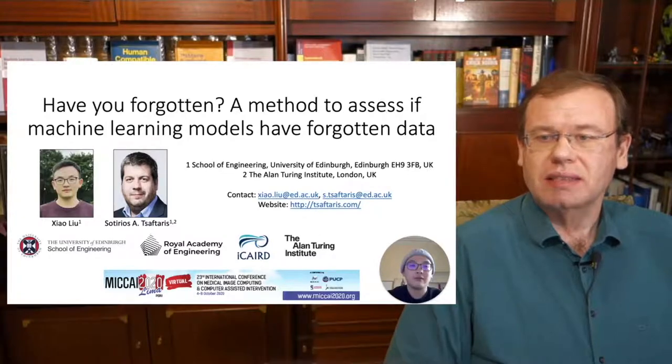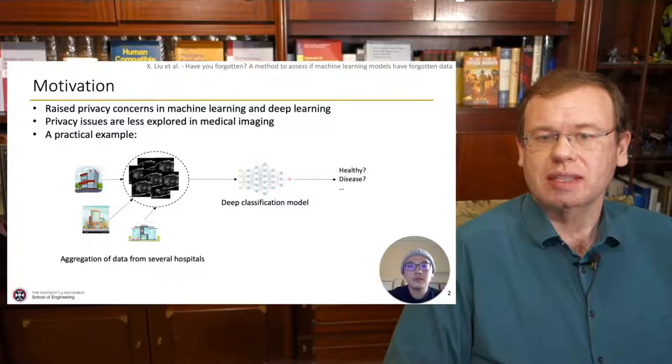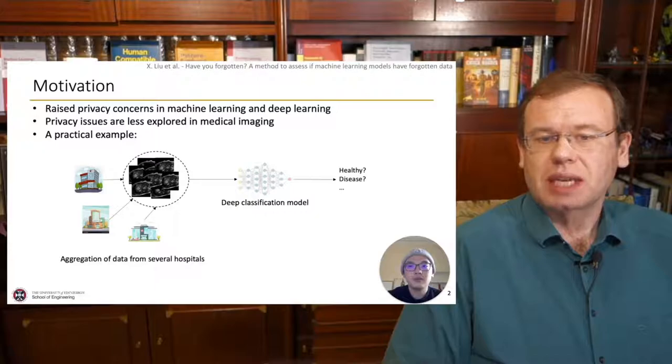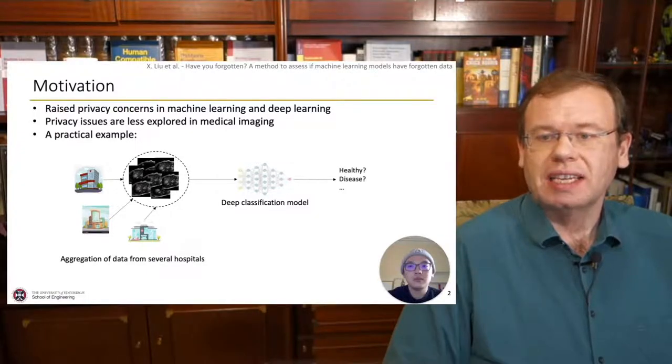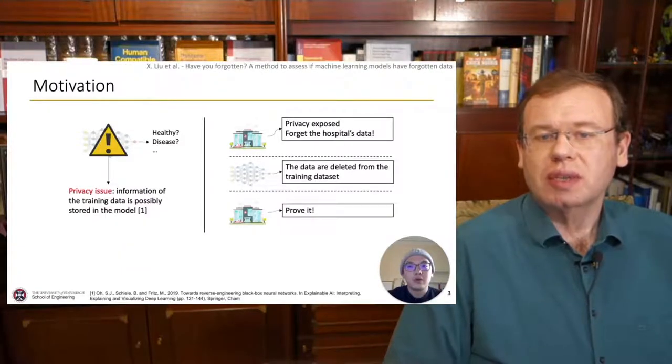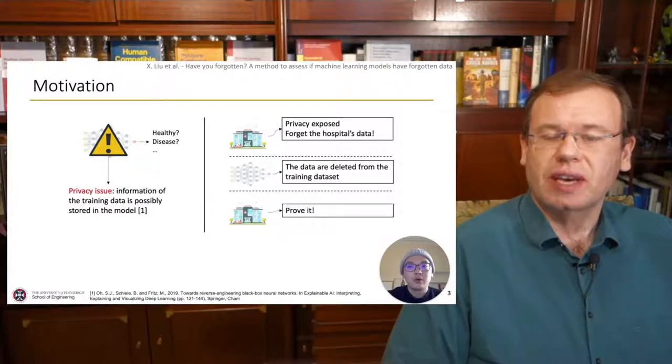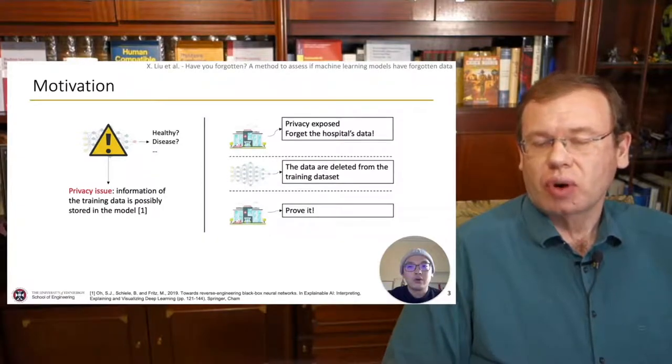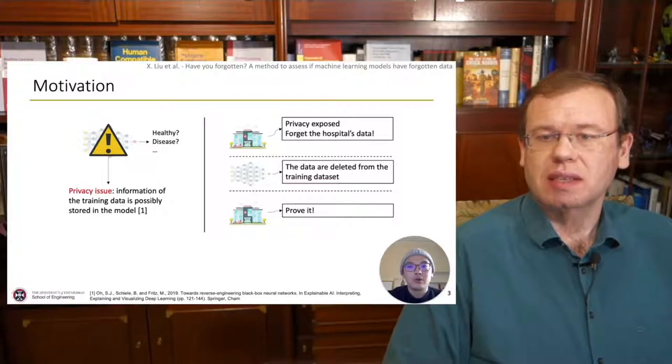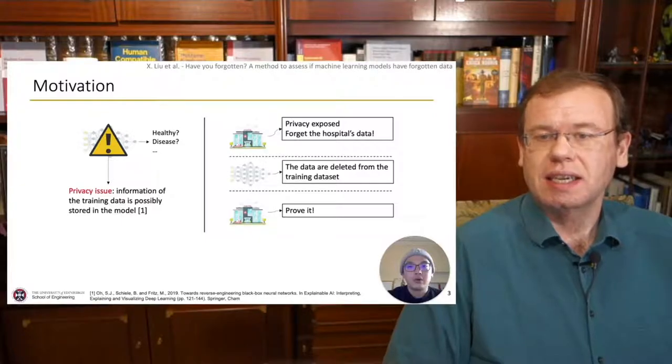And he presented this very nicely with the motivation that what we do all day is we train those deep learning models. And you can see that we typically build in data maybe from many different hospitals. We train our deep classification model and then can do predictions about whether the patients are healthy or diseased. But of course there are probably privacy issues. So sometimes you want to remove things from the training data. For example, the privacy could have been exposed in one of the hospitals and the hospital poses the request to forget its respective training data set.